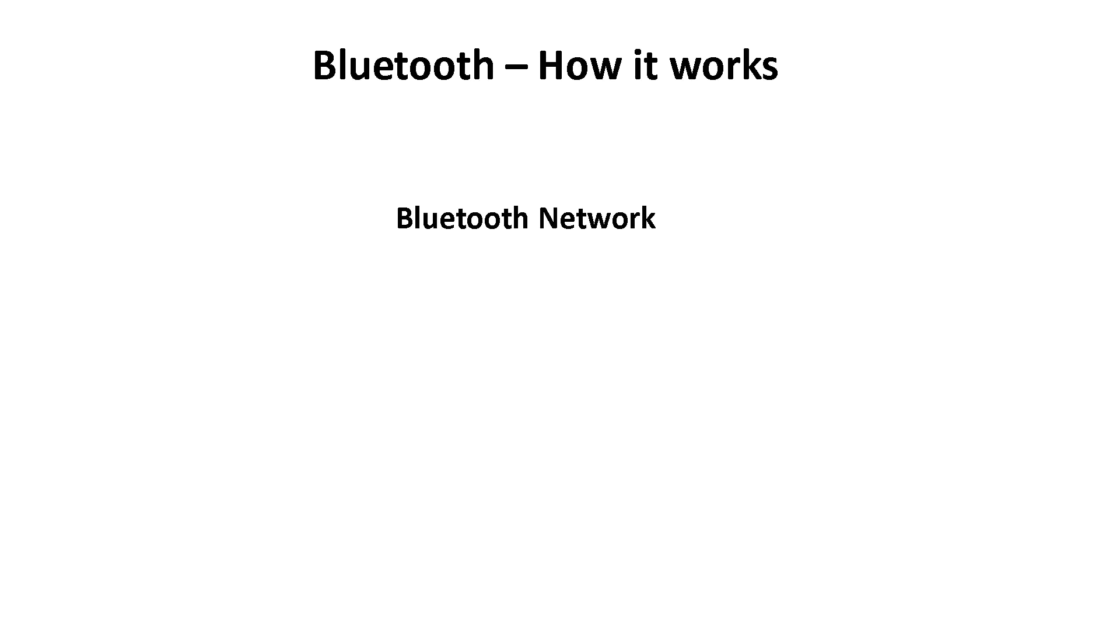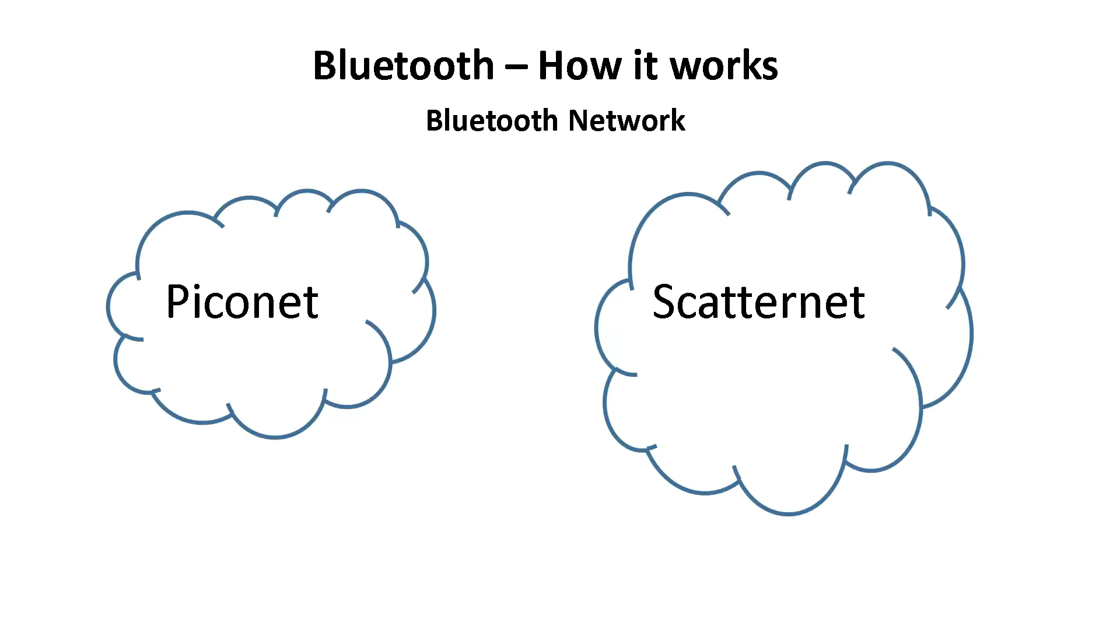All right, let's see how Bluetooth works. Well first, let's talk about network topologies in Bluetooth. There are two types of network topologies: the Piconet and the Scatternet.